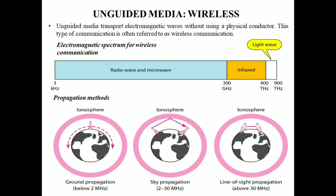This figure shows the part of the electromagnetic spectrum ranging from 3 kilohertz to 900 terahertz. From 3 kilohertz to 300 gigahertz is the range for radio waves and microwaves. From 300 to 400 terahertz it is infrared, and 400 to 900 terahertz is for light waves.